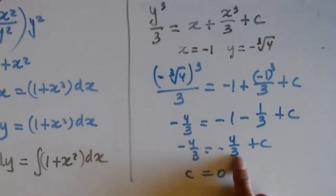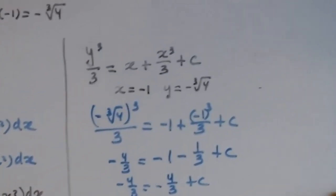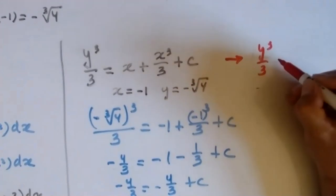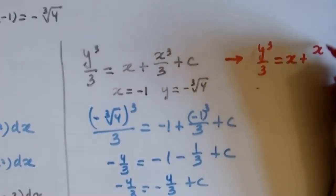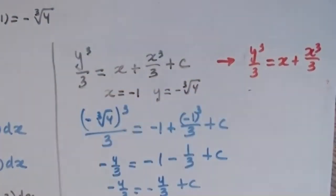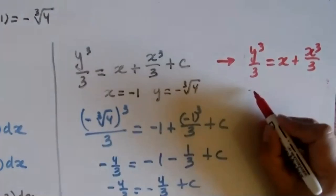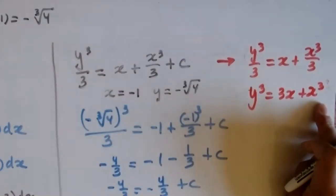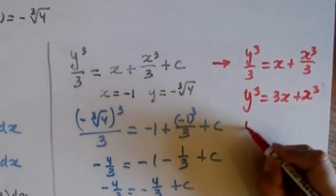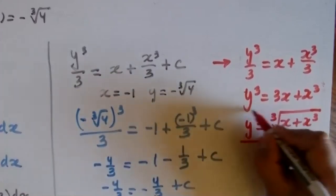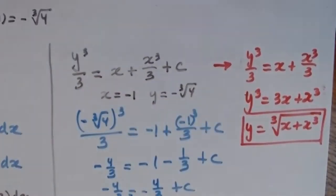So my solution is y³/3 = x + x³/3 + 0. Multiplying everything by 3: y³ = 3x + x³. Then taking the cube root of both sides: y = ∛(3x + x³). That is my answer.